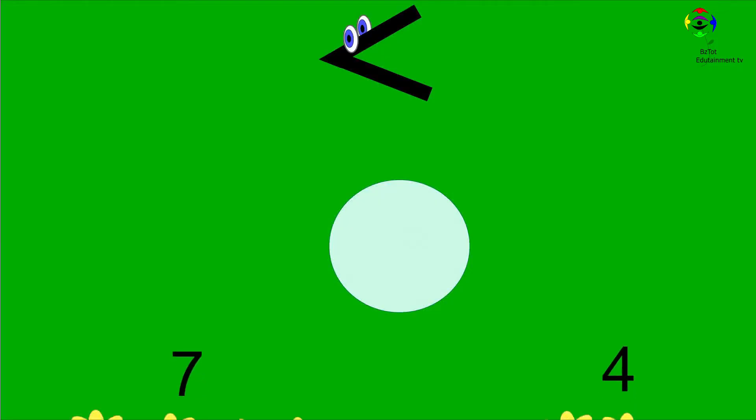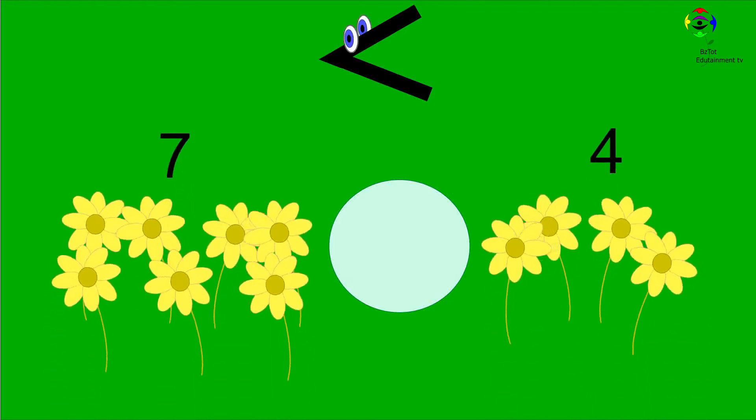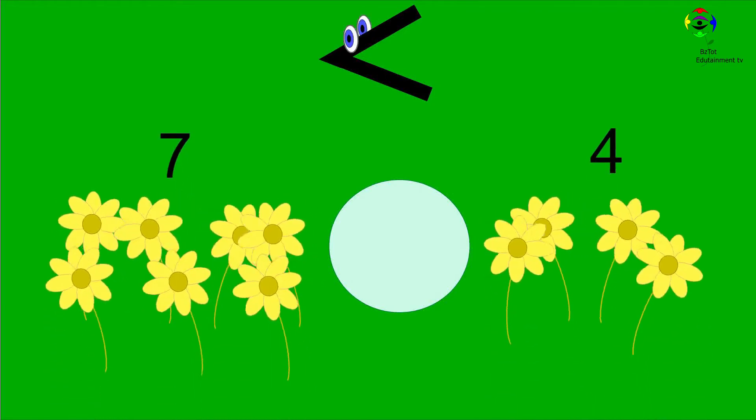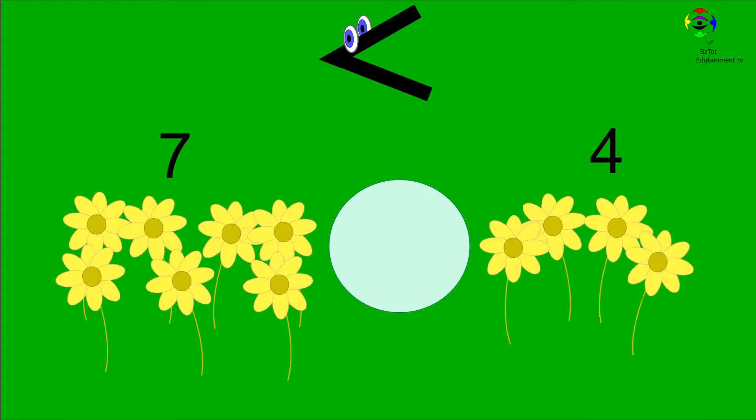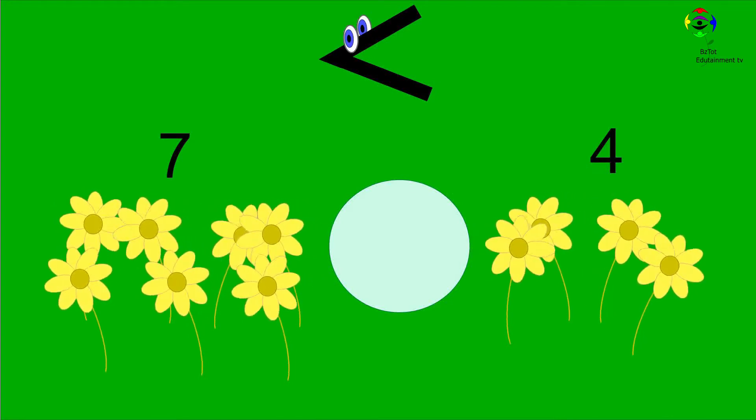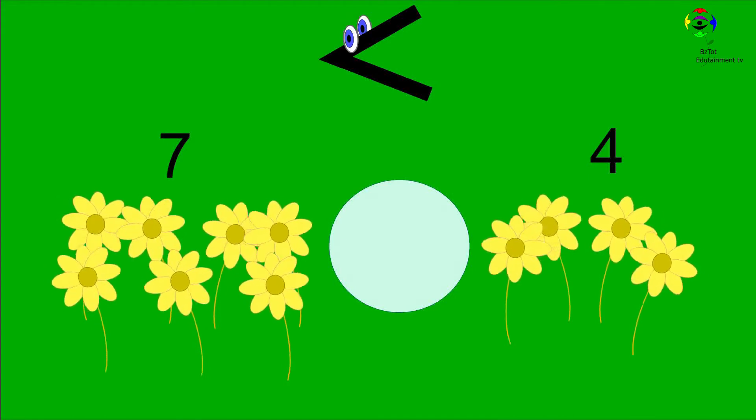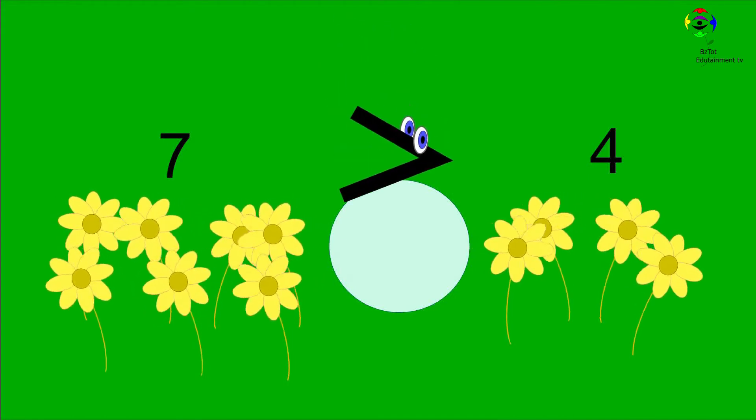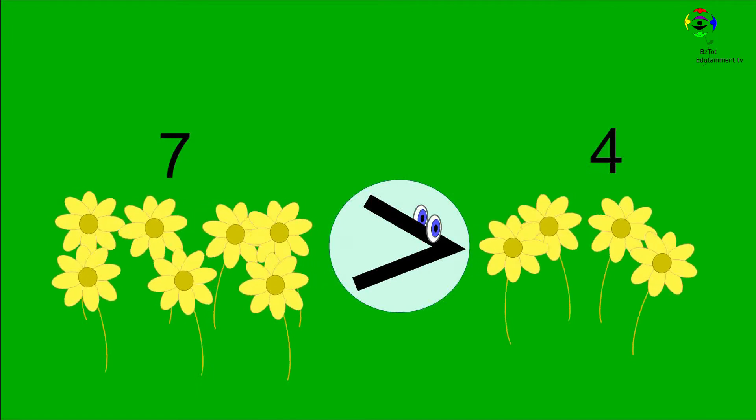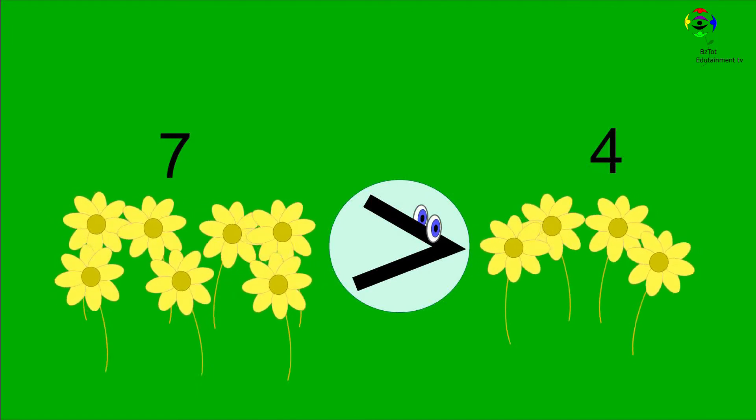Let's try this one. We have seven flowers and four flowers. Seven is more than four. Therefore, seven is greater than four. Mr. Sign faces the bigger number.